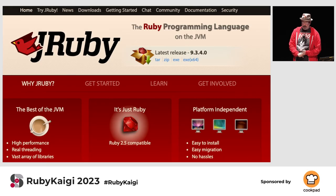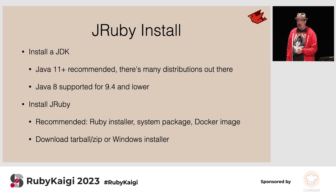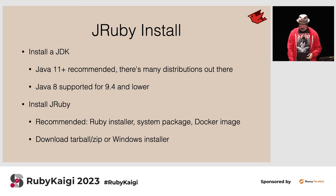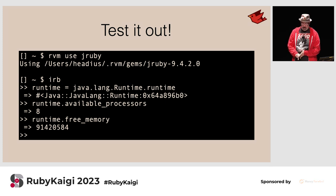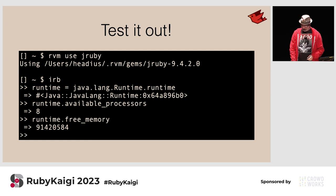Getting started with JRuby is pretty easy. You can go to jruby.org for more information. Generally there are only two steps: install a JDK and then use whatever Ruby installer you're used to — RVM or ruby-install — and that's the quickest way to get up and going. You can also just download the tarball we ship, unpack it and you've got JRuby running. Here's JRuby with IRB calling into Java libraries — the java.lang.Runtime class, checking processors and free memory.